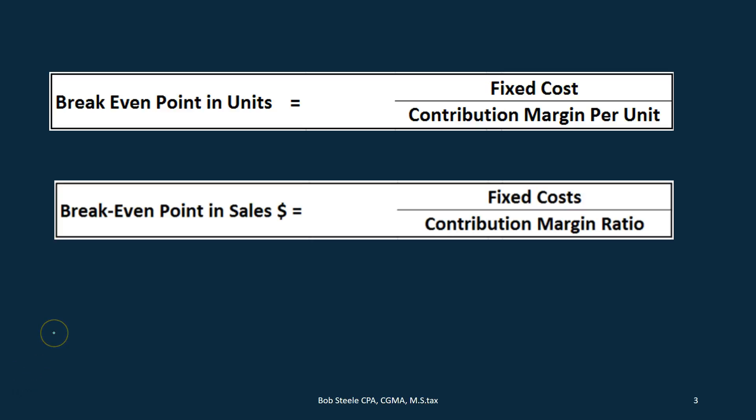When we think about the break-even point in units, it's very important for a business to think about how many units they have to sell in order to break even. We can then think about how many units we have to sell not only to break even but to get an expected revenue. This is a really important calculation no matter what type of business — from a hot dog stand to a very large corporation — we want to think about how many units we need to sell to achieve a certain goal: first breaking even, then breaking even plus some profit margin.